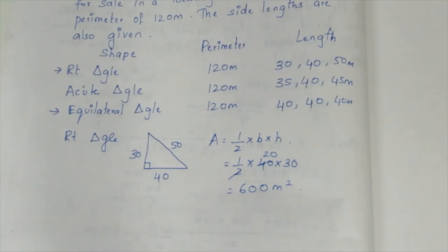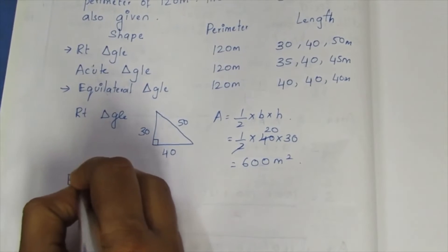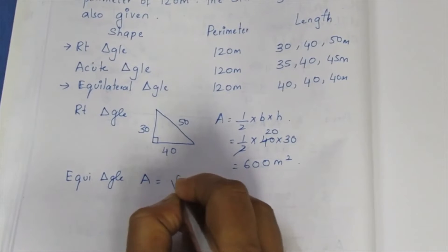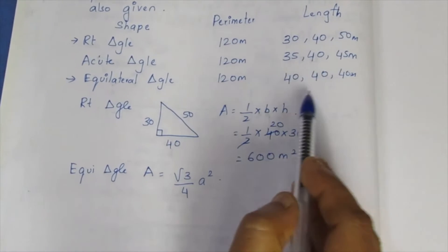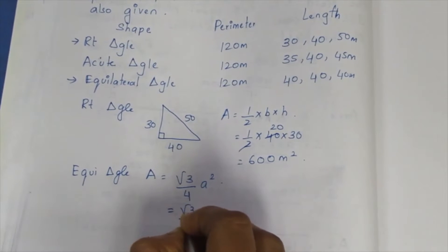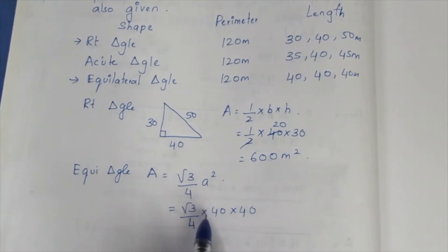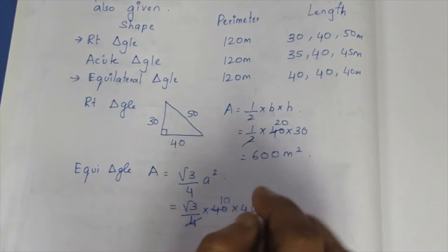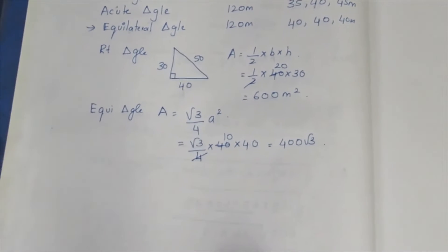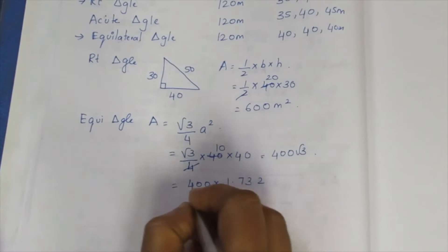Now for the equilateral triangle, we use the formula: Area = (√3 / 4) × a². Here a is the side length. Since the perimeter is 120m and all sides are equal, a = 40m. We substitute a = 40, so a² = 1600. Using √3 ≈ 1.732, we compute (1.732 / 4) × 1600.